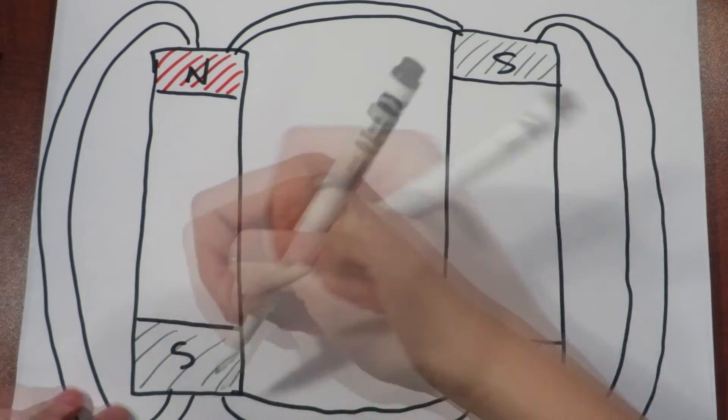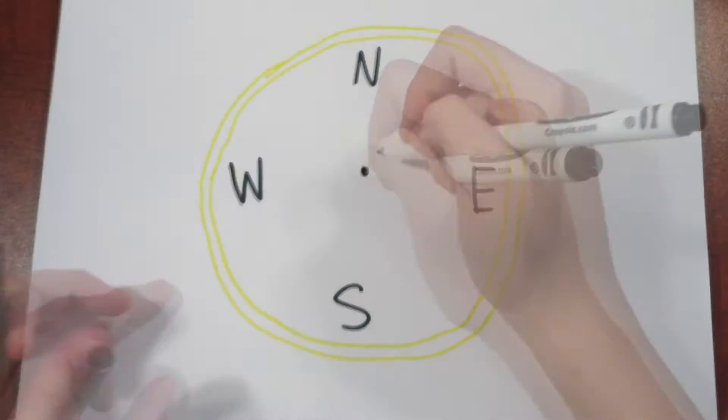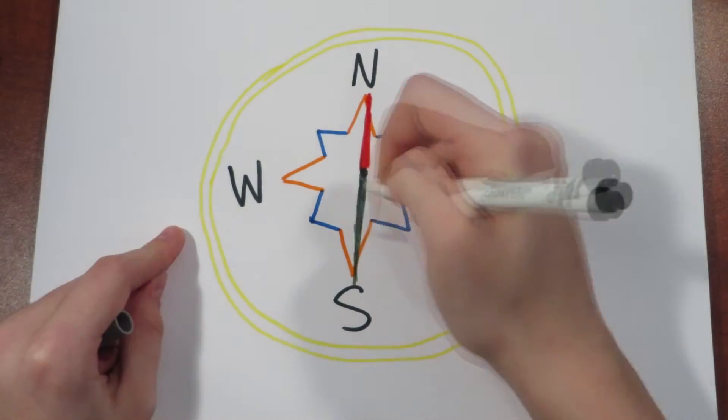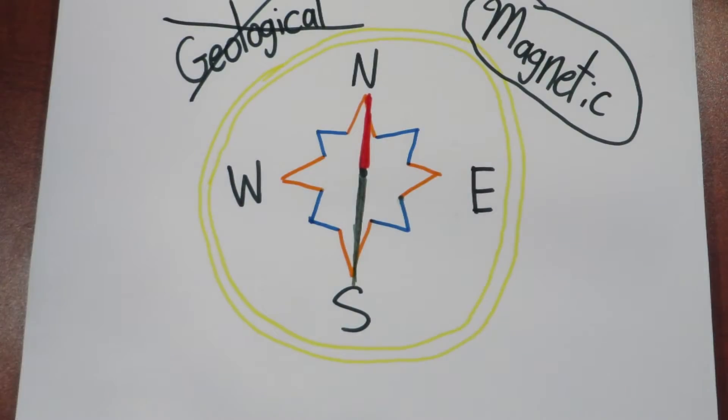So the north attracts the south, and the south attracts to the north. A compass is said to point north. However, the north end of the compass that shows the geological north isn't showing the magnetic north.